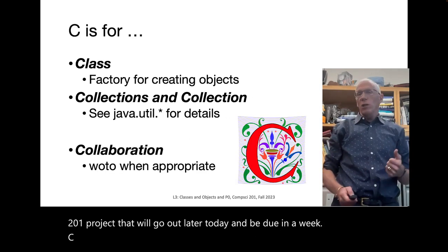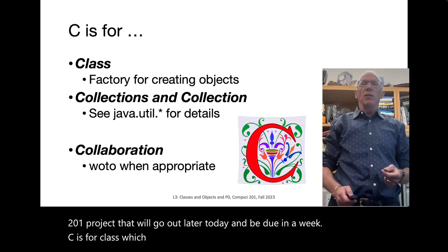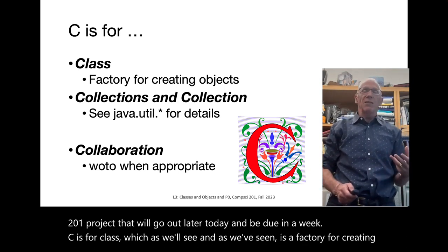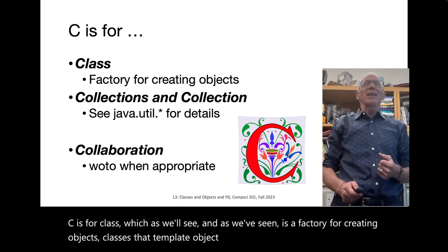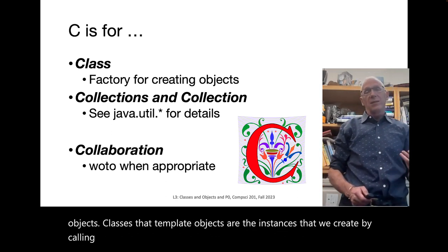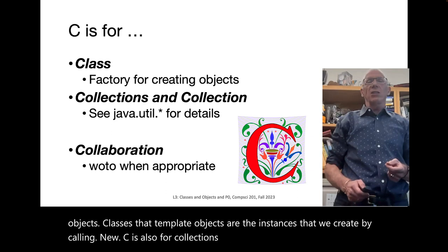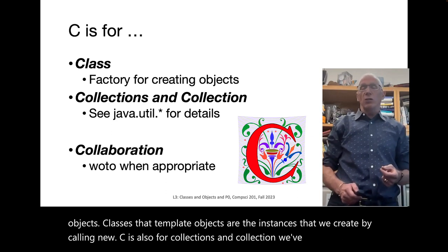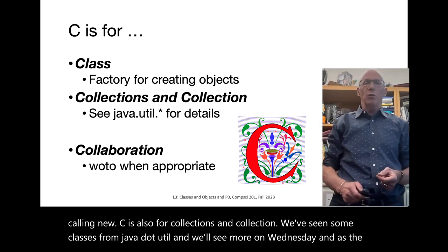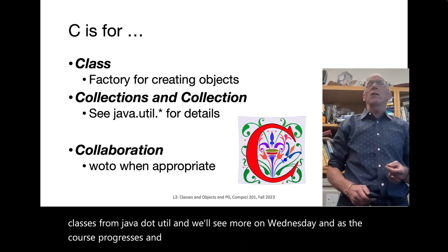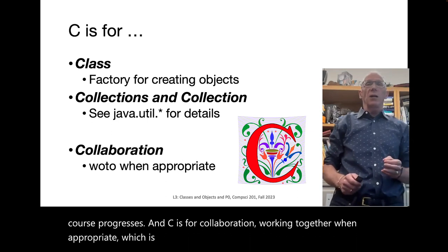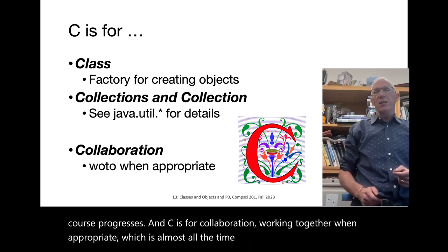C is for class, which, as we've seen, is a factory for creating objects. Class is the template. Objects are the instances that we create by calling new. C is also for collections — we've seen some classes from java.util, and we'll see more on Wednesday. And C is for collaboration: working together when appropriate, which is almost all the time, except when we're having assessments.